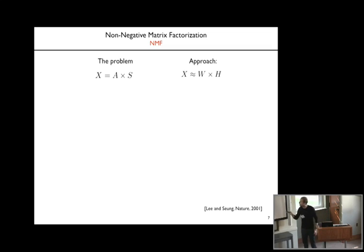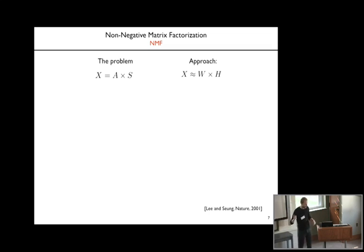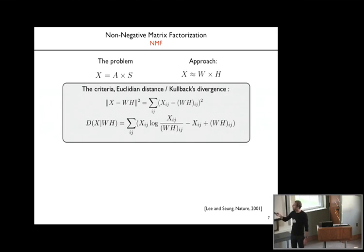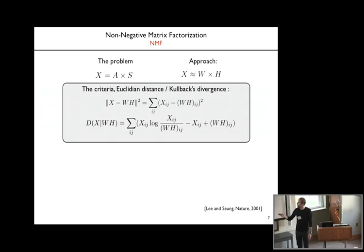The approach is the following: you rewrite this equation by saying that W is an approximation of A and H is an approximation of S. The way to identify W and H is to minimize a criterion which is either the Euclidean distance between the matrix X and the product W times H, or the Kullback–Leibler divergence between X and the product W times H.